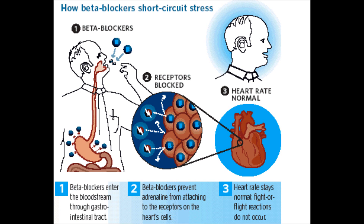Beta blockers lower blood pressure and heart rate. They are recommended post-MI and now also for most CHF patients. They decrease myocardial O2 demand. Generic names usually end in 'olol': atenolol (Tenormin), carvedilol — which is a beta and alpha blocker (Coreg) — propranolol (Inderal), metoprolol (Toprol), and nadolol (Corgard).